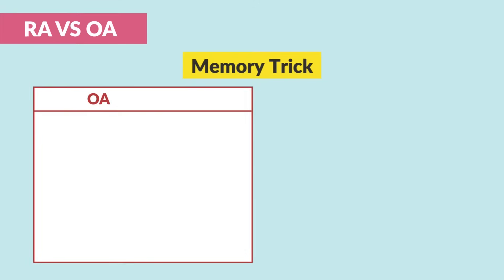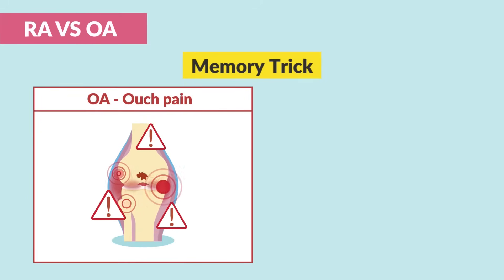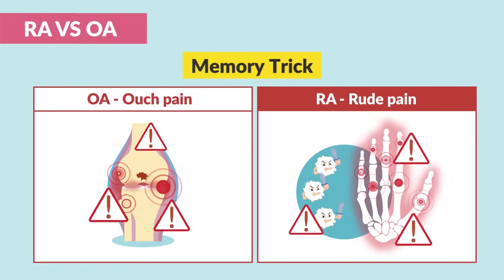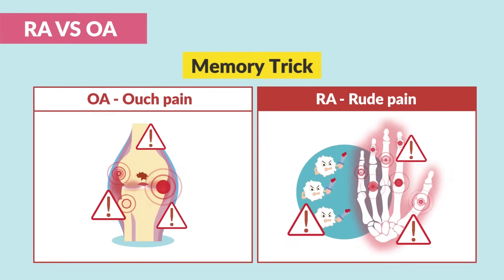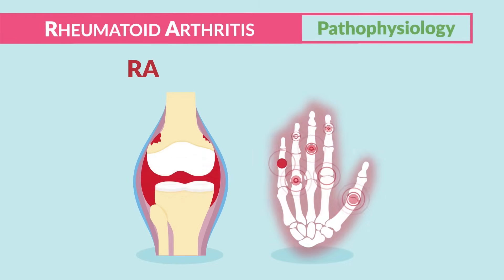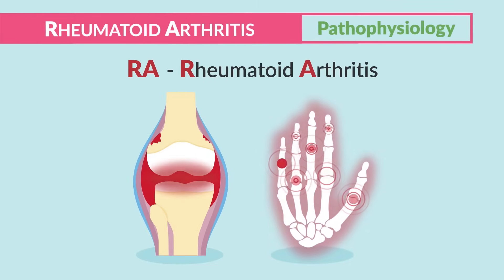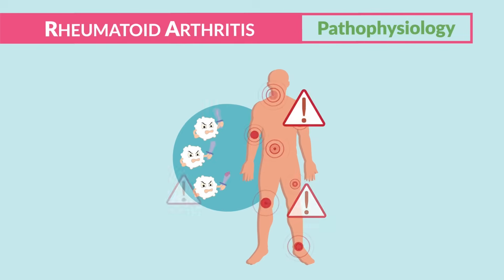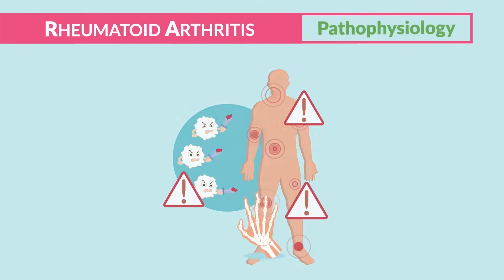Memory trick: OA is 'ouch' pain — bone on bone rubbing. RA is 'rude' pain — the body is attacking itself. So rude! Let's cover RA first: rheumatoid arthritis is the autoimmune disorder where the body attacks itself.